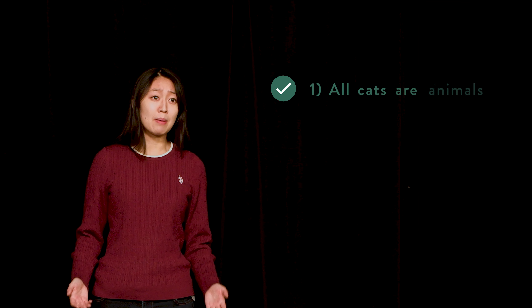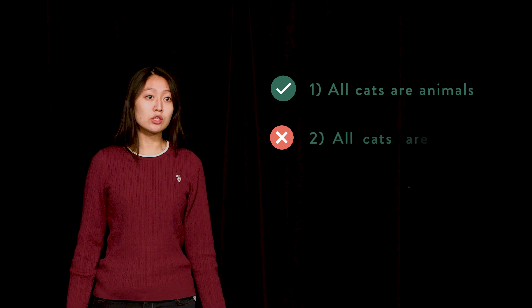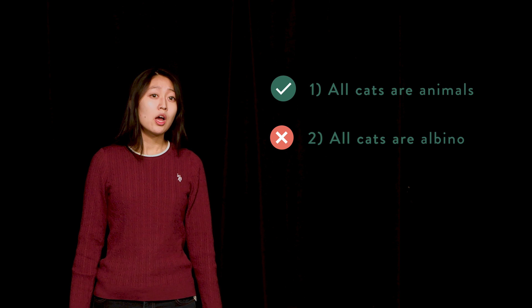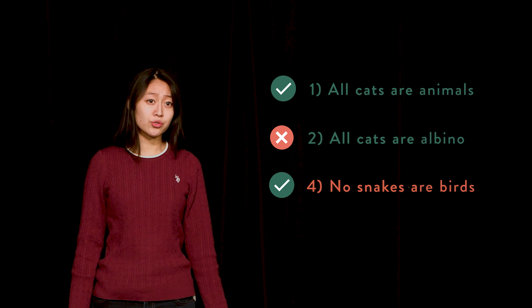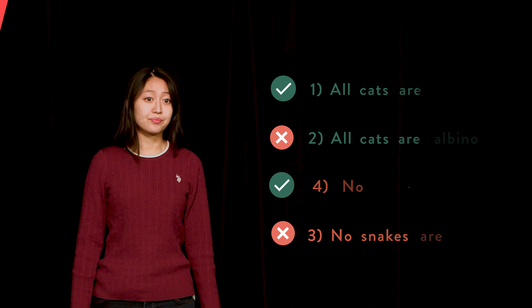Think of your own examples: a Universal Affirmative proposition that is true, a Universal Affirmative proposition that is false, a Universal Negative proposition that is true, and a Universal Negative proposition that is false.